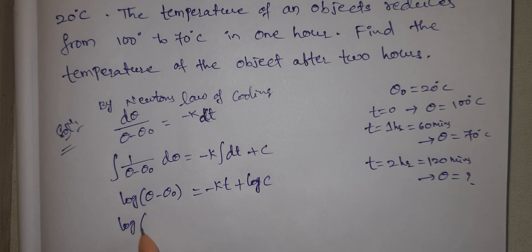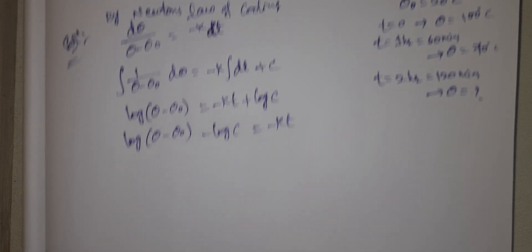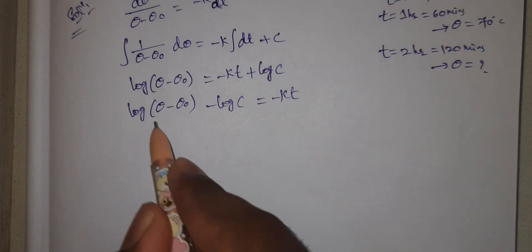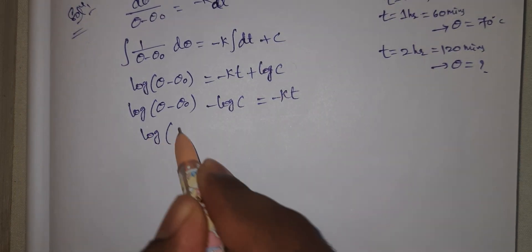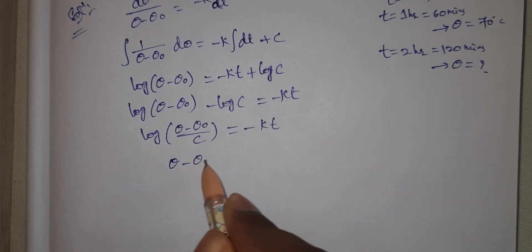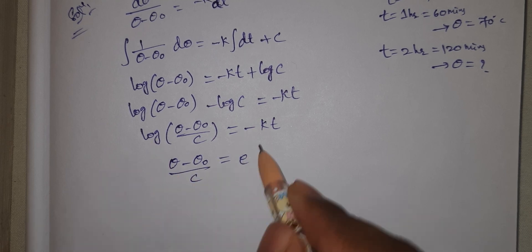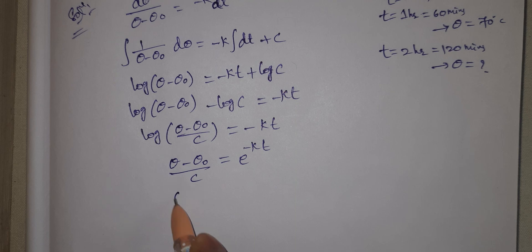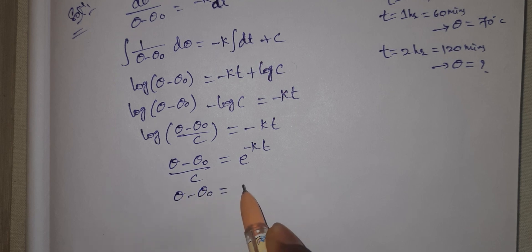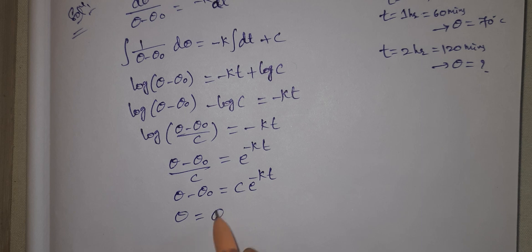This gives log of (θ minus θ₀) equals minus k·t plus log c. Rearranging: log(θ minus θ₀) minus log c equals minus k·t. Using log a minus log b equals log(a/b): log((θ minus θ₀)/c) equals minus k·t. Converting to exponential form: θ minus θ₀ equals c·e^(minus k·t). Therefore θ equals θ₀ plus c·e^(minus k·t). This is equation 1.